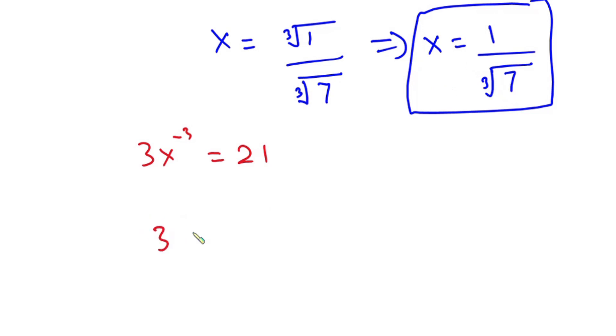we have 3 times 1 over the cube root of 7 to the power negative 3, and this should be 21.